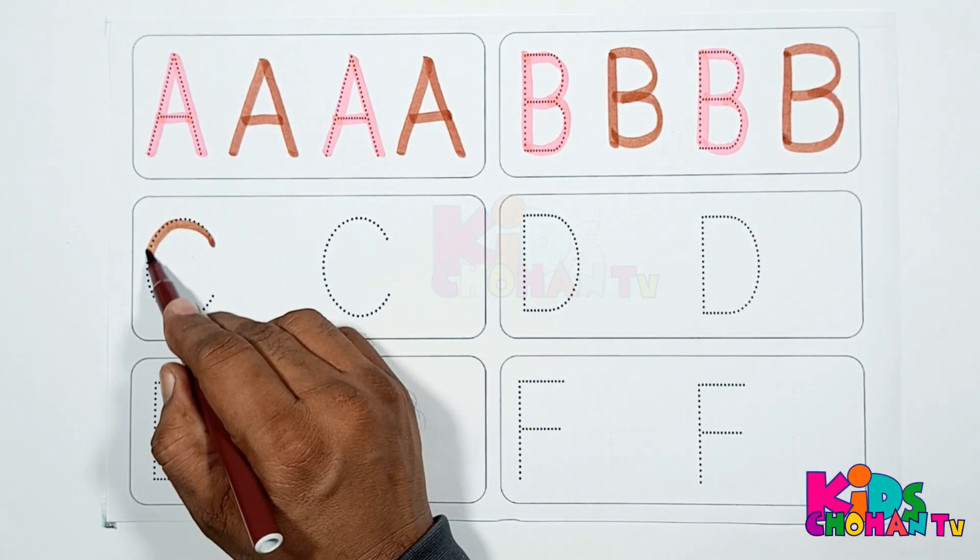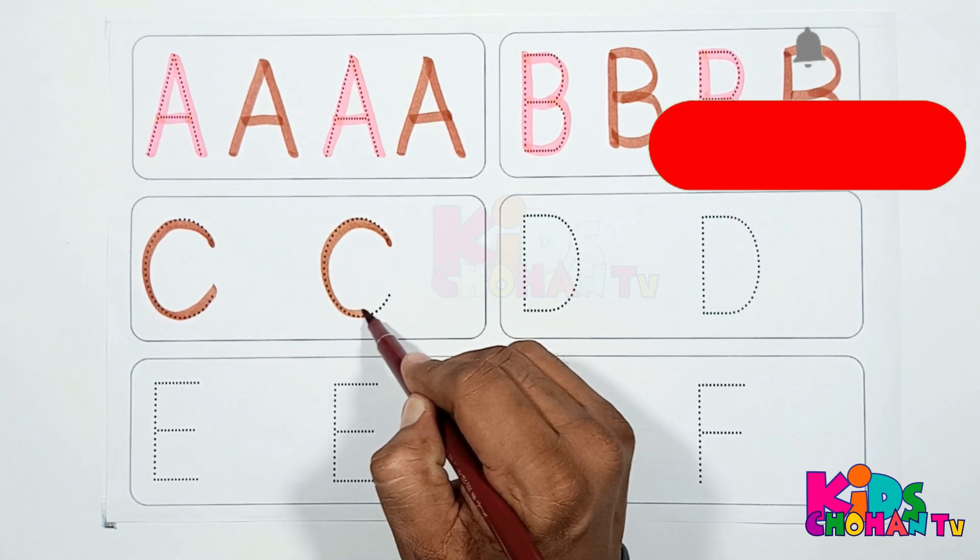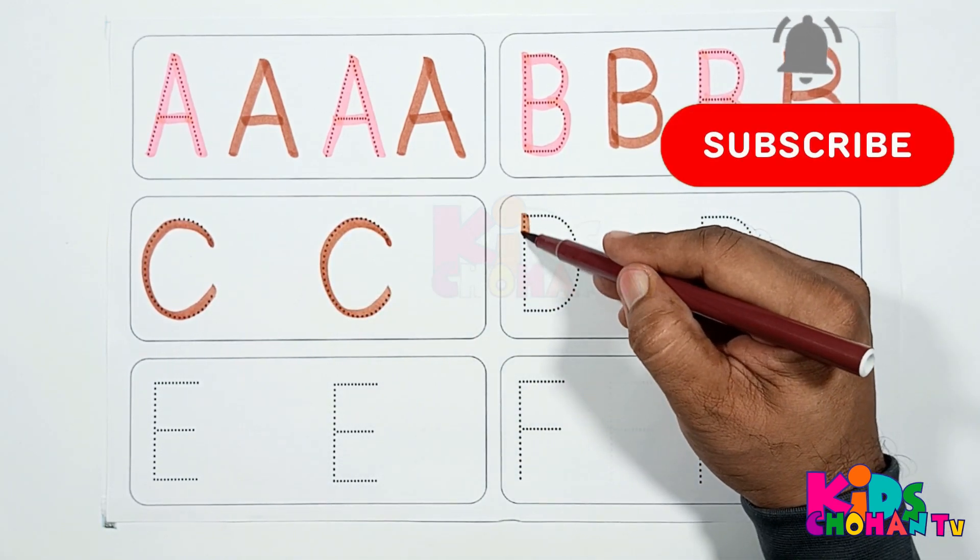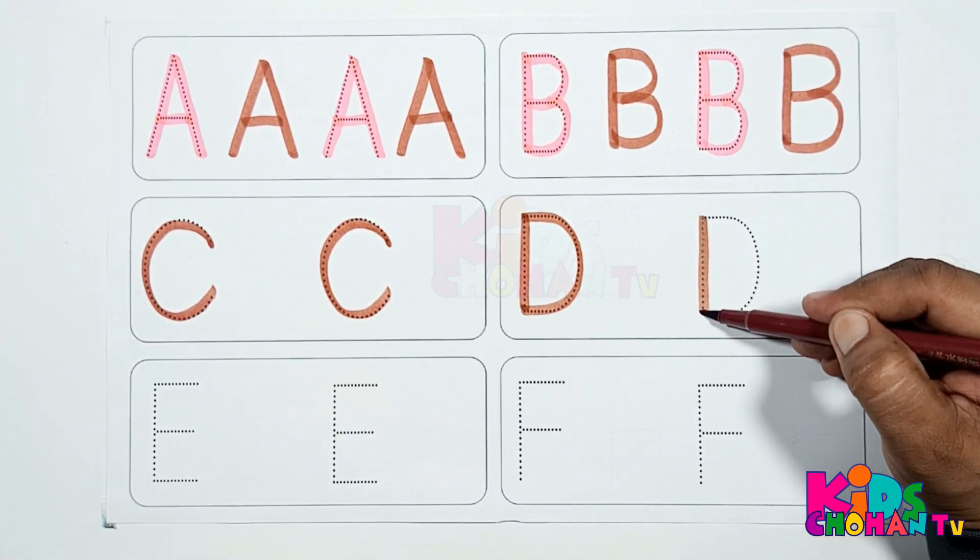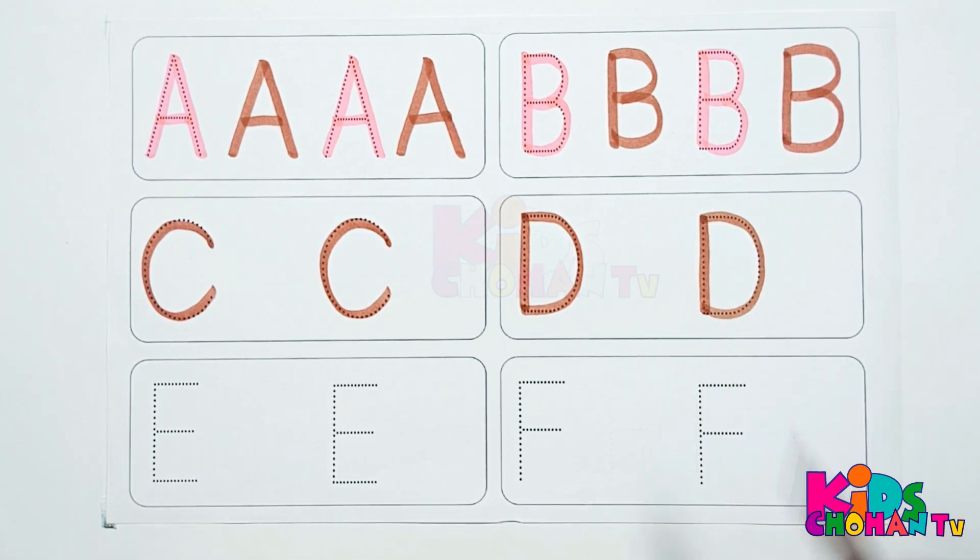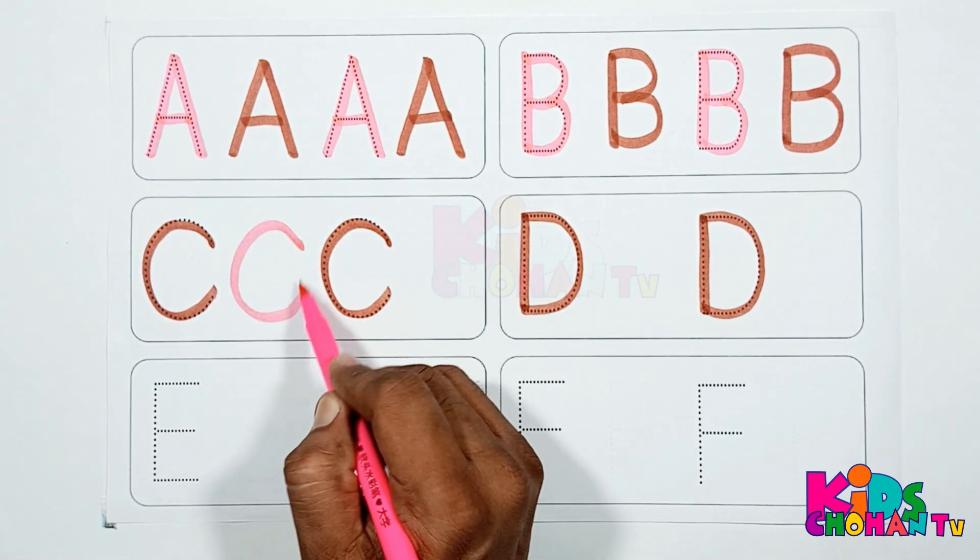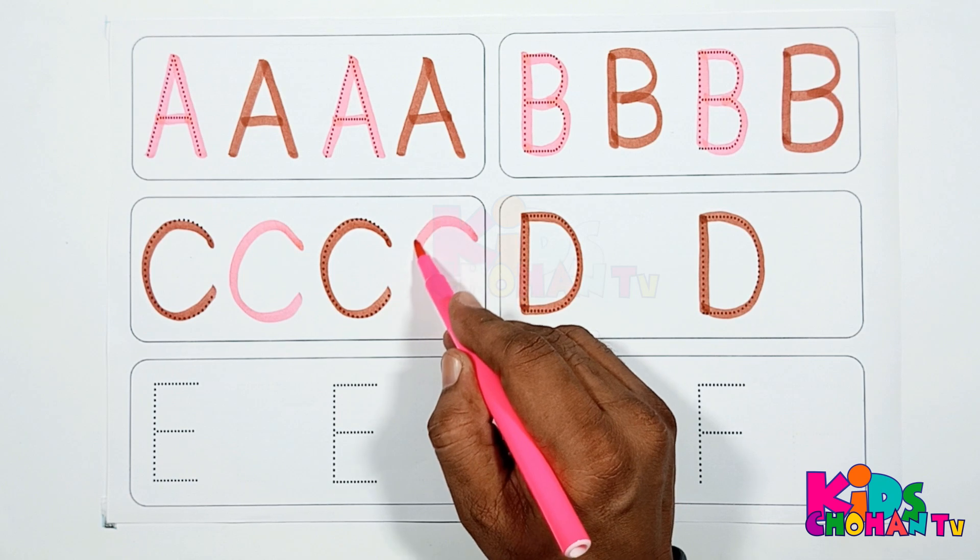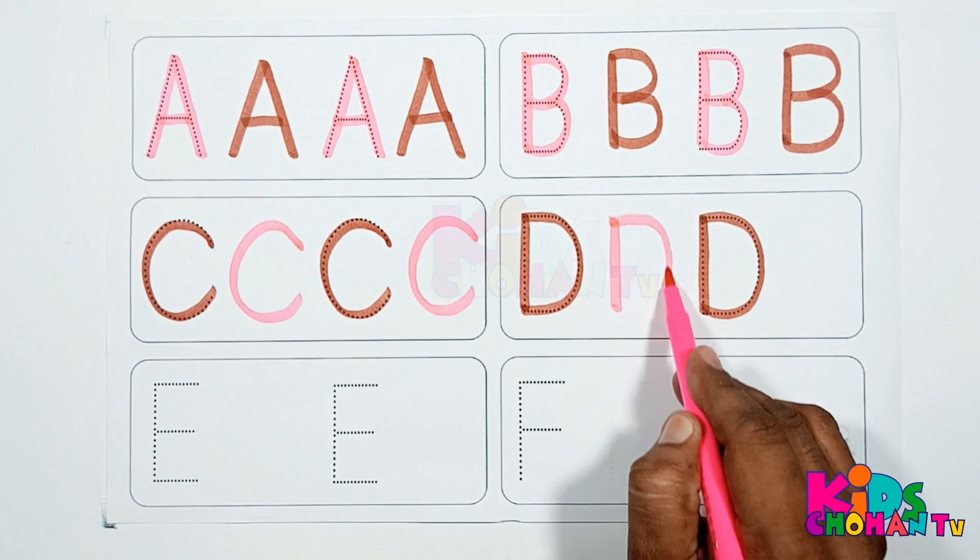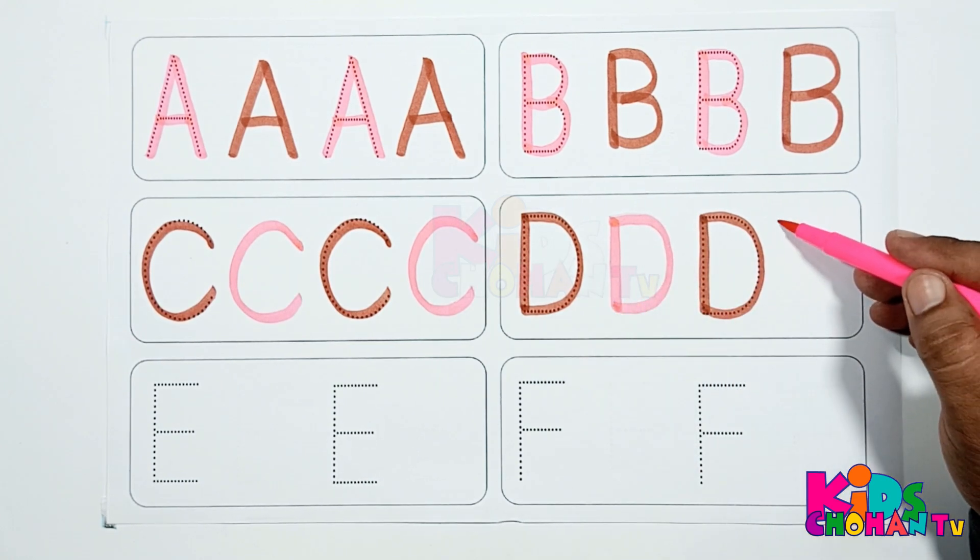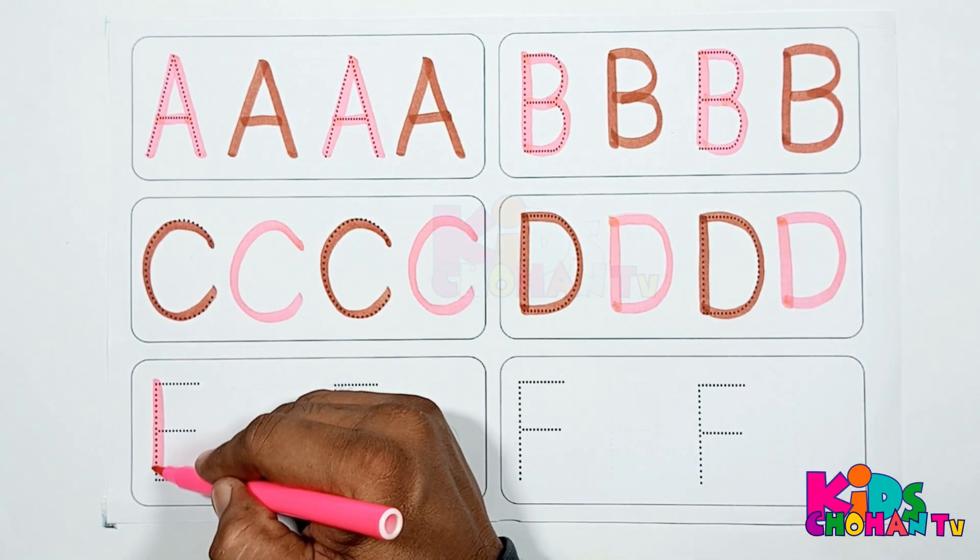Now kids, we are dressing letter C. C is for cat. This is letter C. C is for car. This is letter D. D is for door.